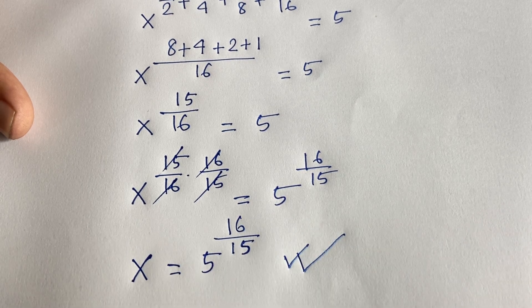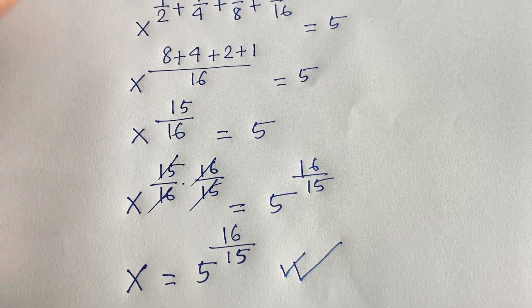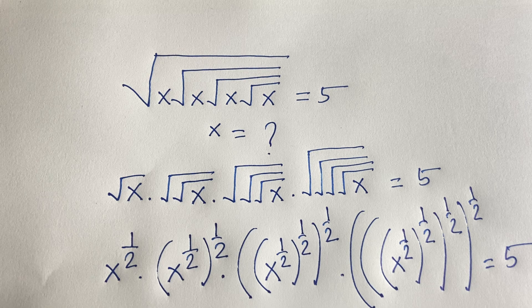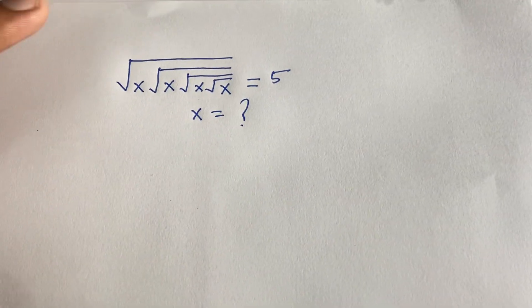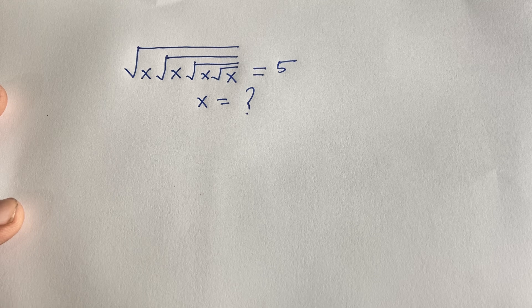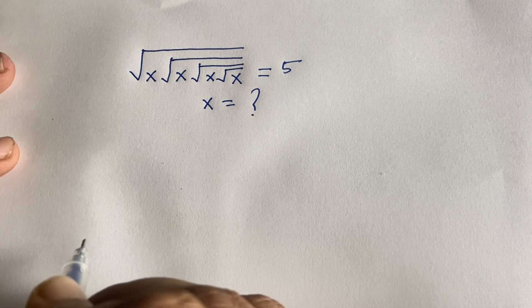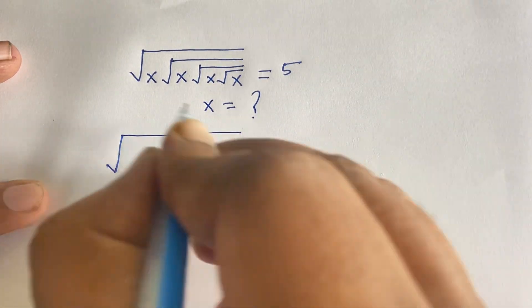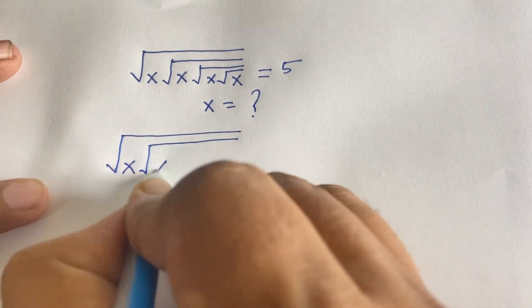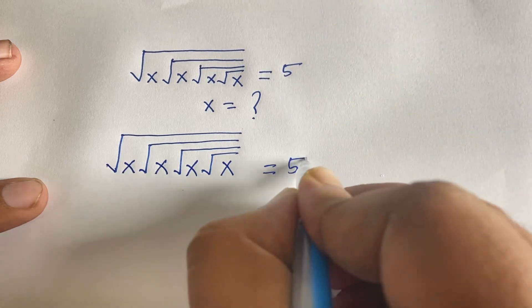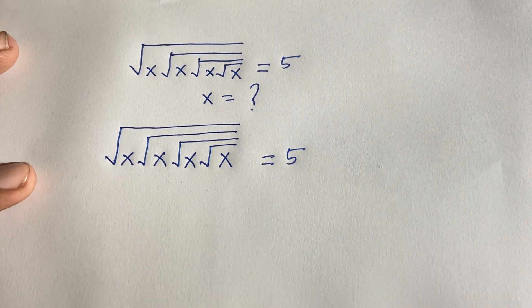Now I solve this question using a second method. The question is: square root of x times square root of square root of x times square root of square root of square root of x times square root of square root of square root of square root of x equals 5. We need to find the value of x.